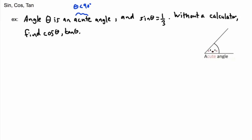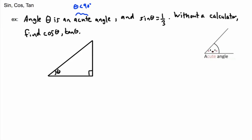We can actually just draw ourselves a triangle. I'm going to draw a right angle triangle — it doesn't matter how it's oriented. There's my angle theta and the 90-degree angle. Using SOH CAH TOA: the side opposite to theta is the opposite, the side opposite the 90 degrees is always the hypotenuse, and the remaining side is the adjacent.